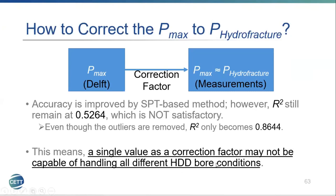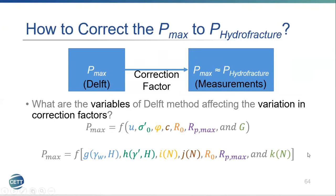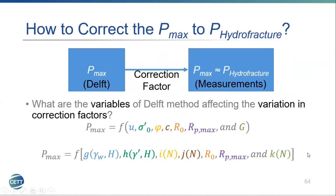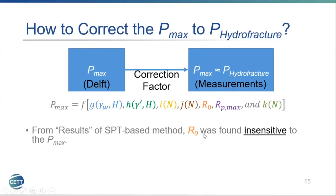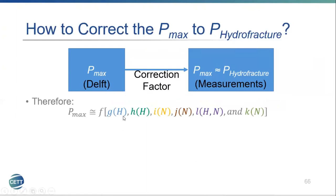I was thinking the correction factors may be affected by variation of some variables in the DELF method. Looking at the DELF method again, Pmax is a function of several variables, each definable in terms of different inputs. R0 was found to be insensitive, and most definitions of RPmax were a function of depth or N-value. Combining this information, Pmax is somewhat a function of depth and N-value.